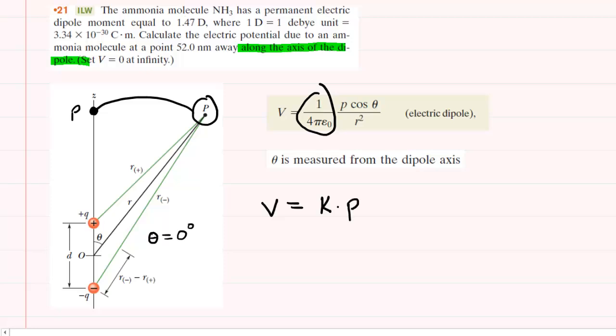This will be times P, which is the electric dipole moment, times the cosine of the angle of which we've already spoken, divided by a distance squared.